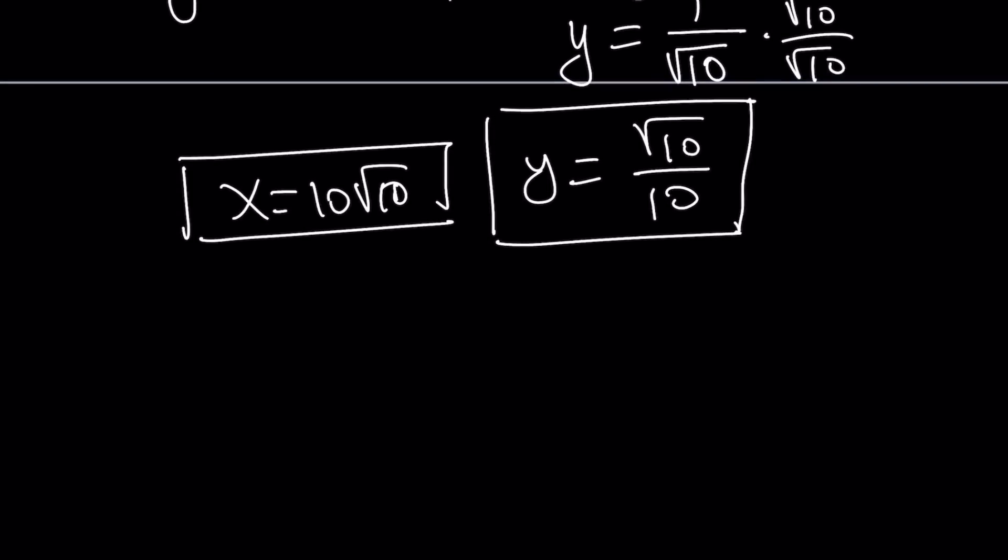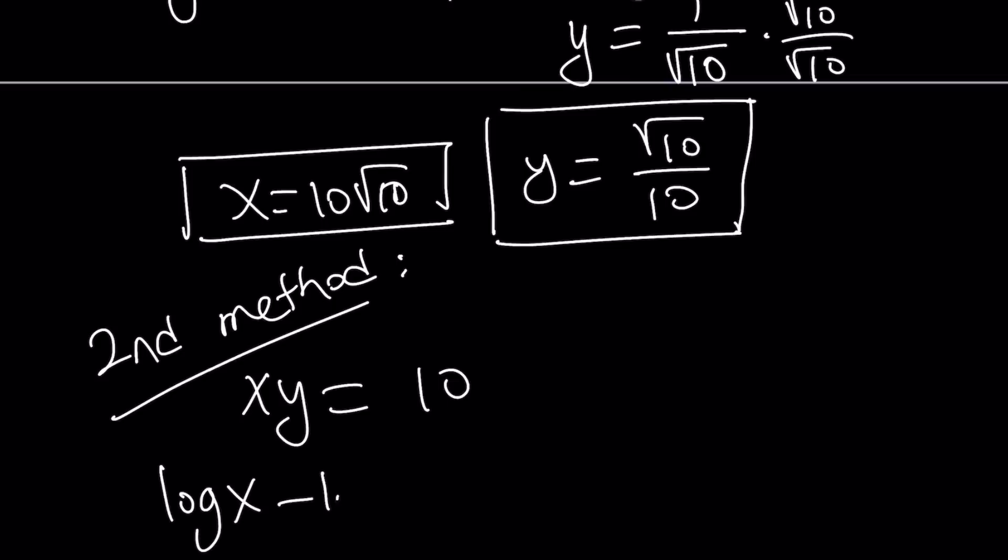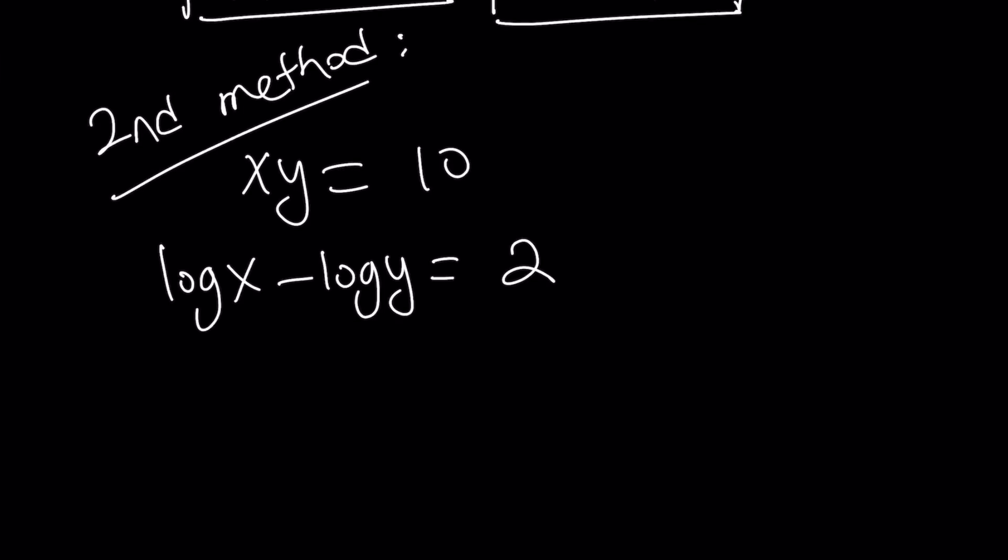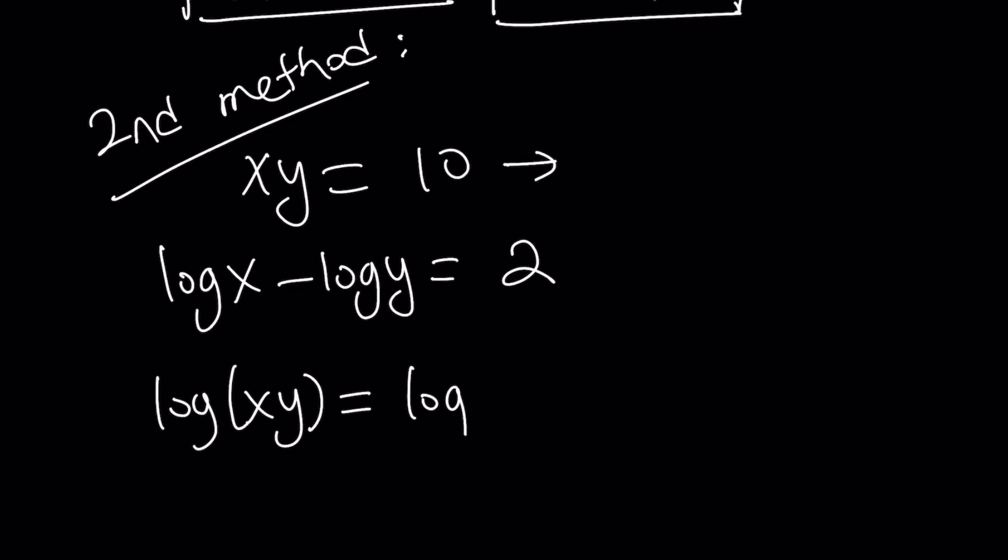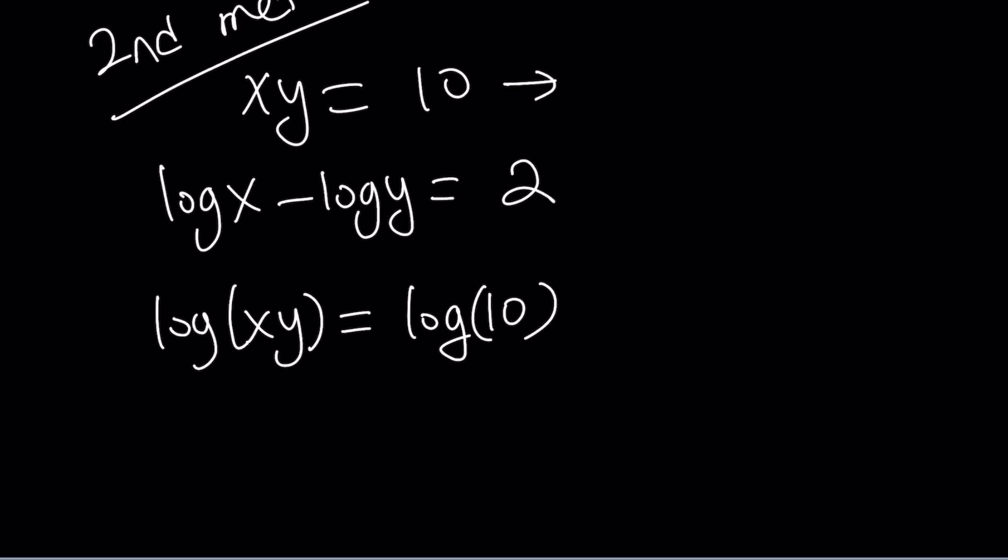And let's go ahead and take a look at the second method. And I'm going to rewrite the system. For my second method, let's rewrite the original problem. xy is 10 and log x minus log y is 2. What am I going to do for my second method? I'm going to go ahead and log the first equation. Why? Because logging xy is going to turn it into a sum of two logs. And we have the difference. So we can build a really nice system that can be eliminated. So if you log xy, since xy is equal to 10, log xy is going to be the same as log 10.